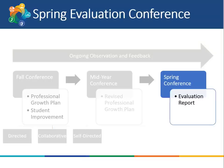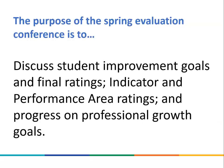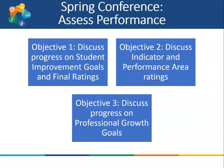The last step in the Delaware Teacher Growth and Support System process is the spring evaluation conference. Every teacher will have a spring evaluation conference after at least four observations are complete. The purpose of the spring evaluation conference is to discuss student improvement goals and final ratings, discuss indicator and performance area ratings, and discuss progress on professional growth goals. After the spring conference, the teacher will receive a summative evaluation report that includes their summative rating on the framework and student improvement goals. At this time, an evaluator may determine that a directed growth plan may be necessary for the teacher for the next school year.